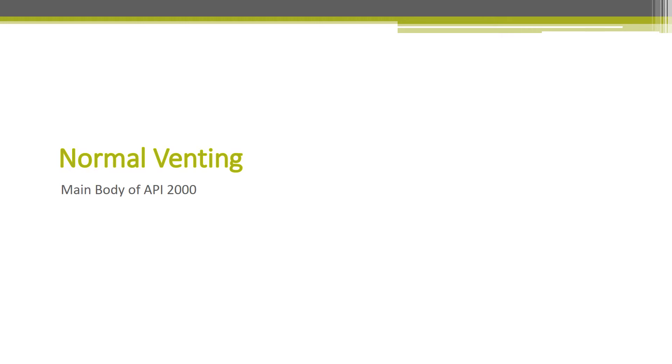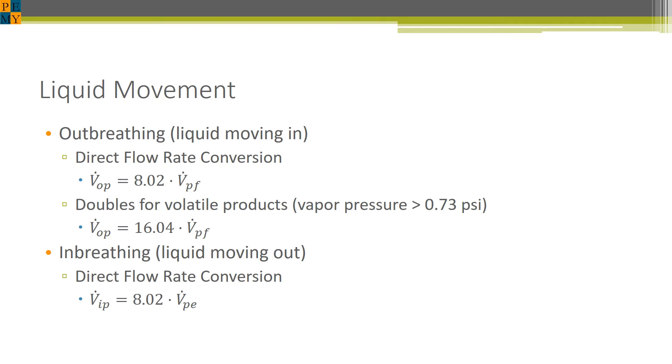Normal venting. Let's begin with normal venting for API 2000. Here we consider the effects on normal venting through liquid movement. When product is getting pumped into the tank, it generates vapors which need to be alleviated, outbreathing. This equation is a direct flow rate conversion. Essentially, the amount of flow coming into the tank must be the same amount of flow rate coming out of the tank. 8.02 is merely a factor that accounts for unit conversion.